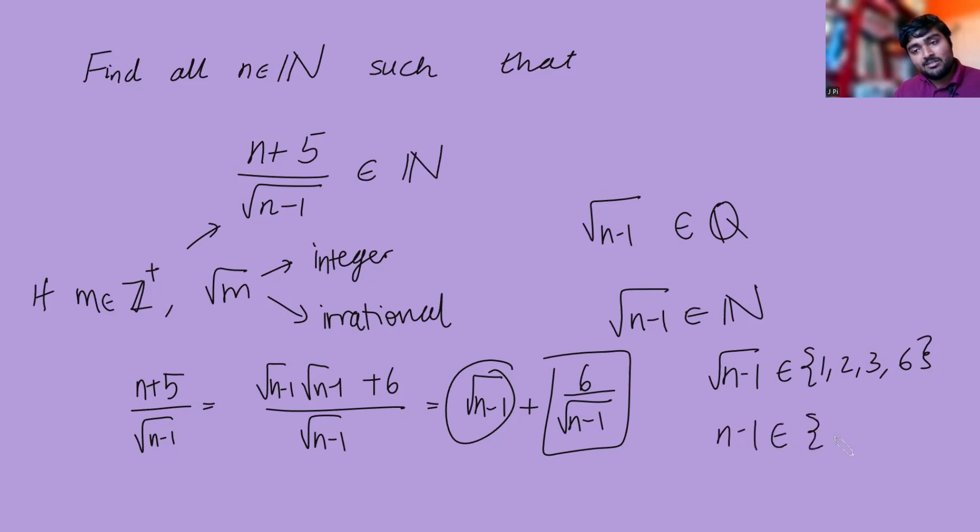So n minus 1 must be 1 squared, 2 squared, 3 squared, or 6 squared, just by squaring each of these. And so therefore the possible values of n are 1 squared plus 1, which is 2, 2 squared plus 1, which is 5, 3 squared plus 1, which is 10, and 6 squared plus 1, which is 37.